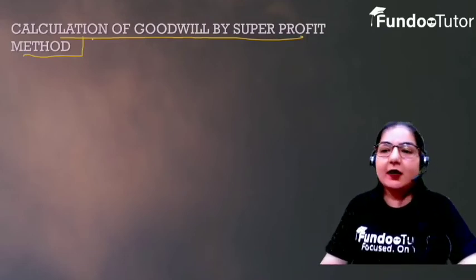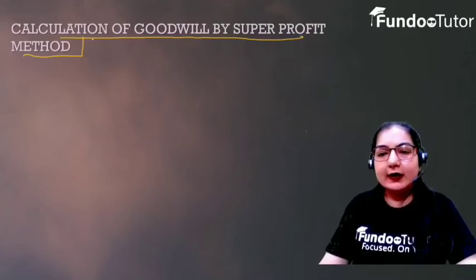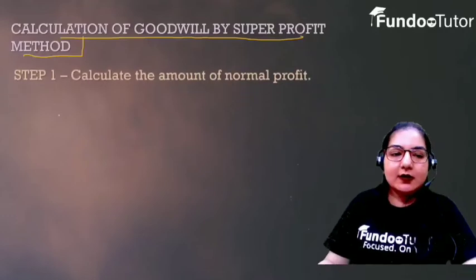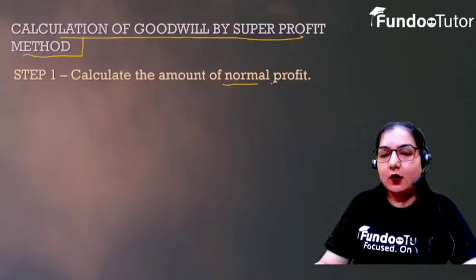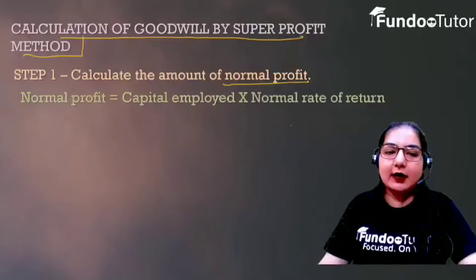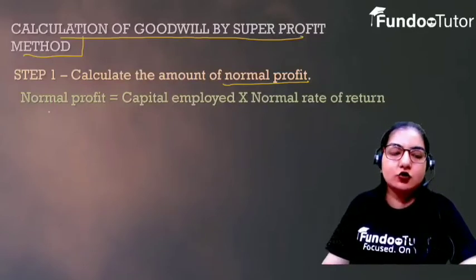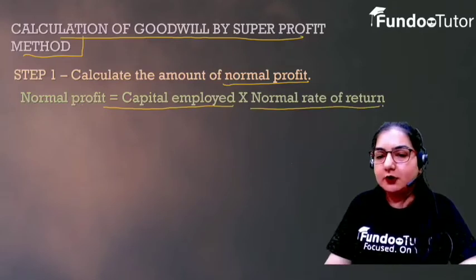Let's talk about which steps you have to follow when calculating goodwill using the super profit method. First of all, you calculate Normal Profit. Normal Profit is equal to Capital Employed multiplied by the Normal Rate of Return.